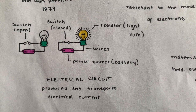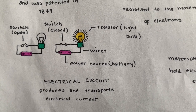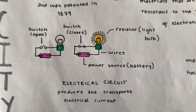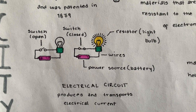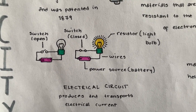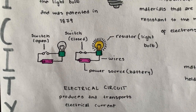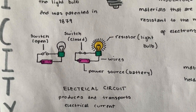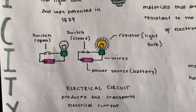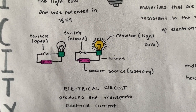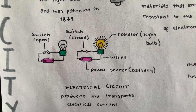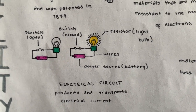An electrical circuit produces and transports electrical current. Here is an example of an electrical circuit. The parts of a circuit are the source or power source, which is a battery in this picture. You have wires, a resistor which is the light bulb, and you also need a switch. A switch opens and closes the circuit. When the circuit is closed, electricity can flow through the circuit. When it's open, it cannot.